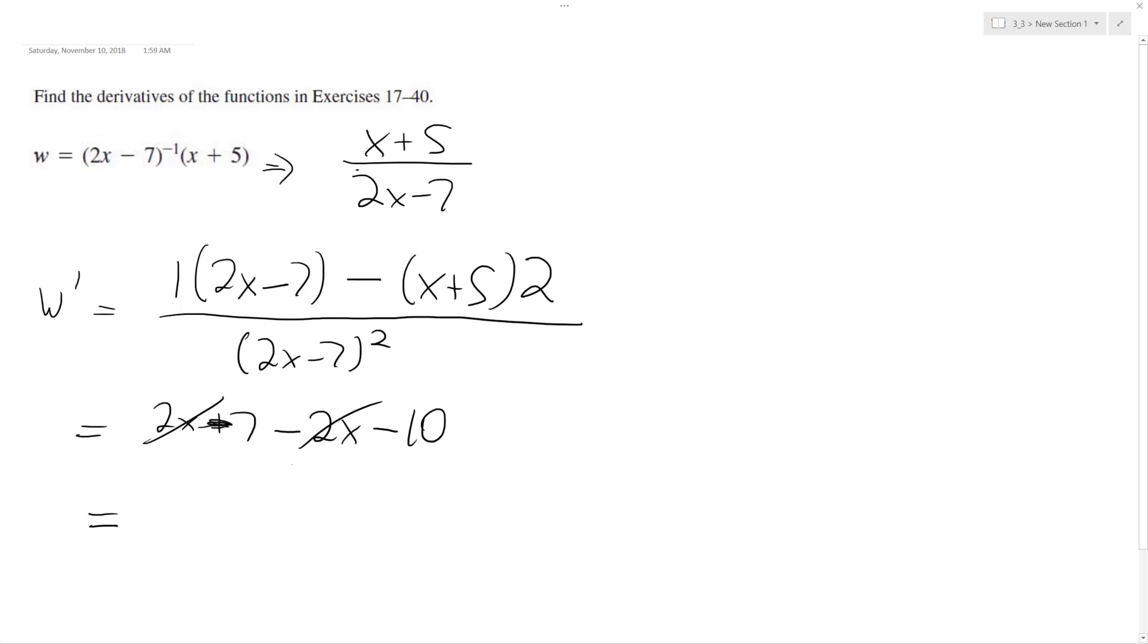So this should be minus 7. Ultimately, I get negative 17 over 2x minus 7 squared. This is our w prime, and that's it.